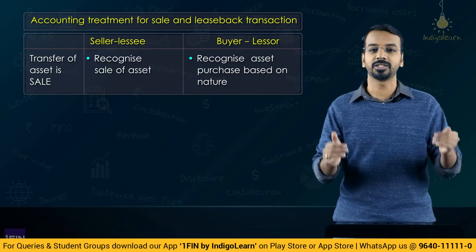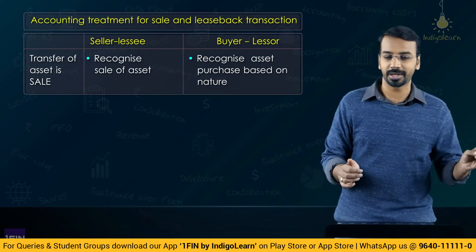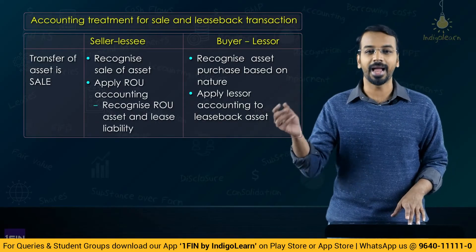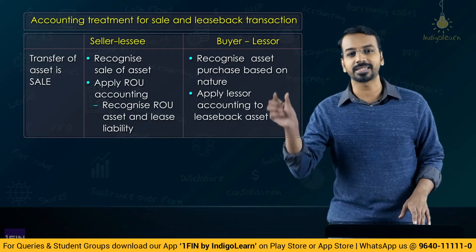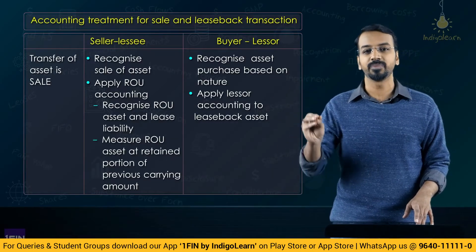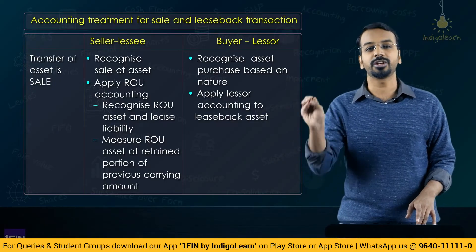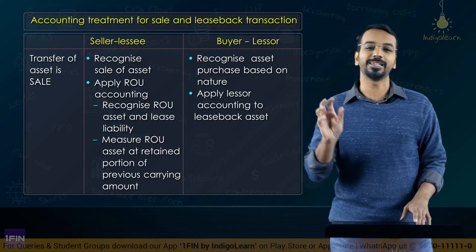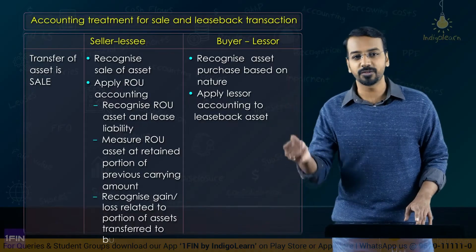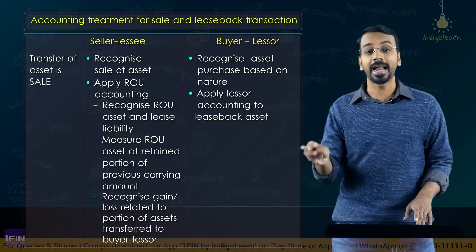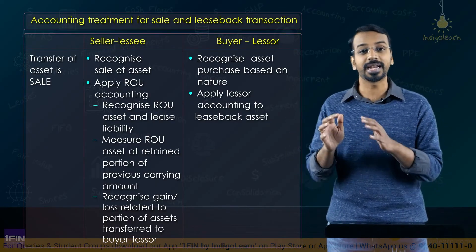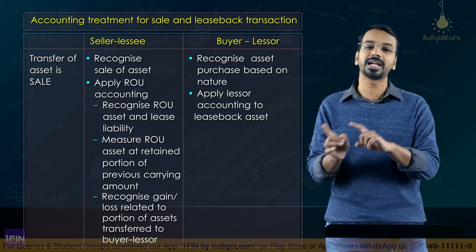Because there is a follow-up leaseback transaction, the buyer becomes the lessor and does the lessor accounting, while the seller does the lessee accounting — recognizing a right-of-use asset and a lease liability. As far as right-of-use asset recognition is concerned, it must be based on the carrying amount of the original asset and restricted to the proportion of rights retained in the sale and leaseback transaction. The right-of-use asset will not be measured as lease liability plus adjustments. Accordingly, the profit recognized is also restricted to the rights transferred to the buyer — for the portion of rights retained, the seller-lessee will not recognize any profit.